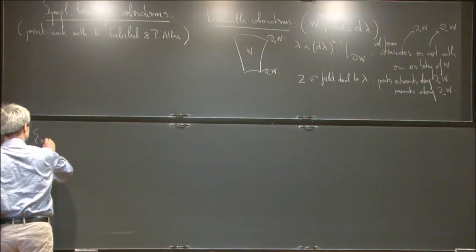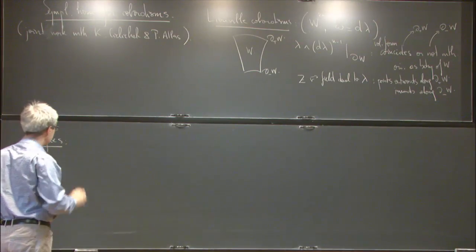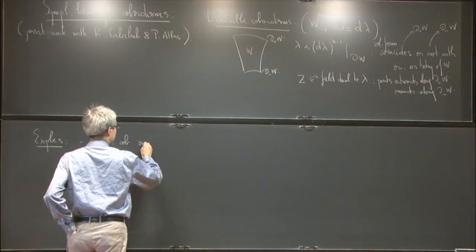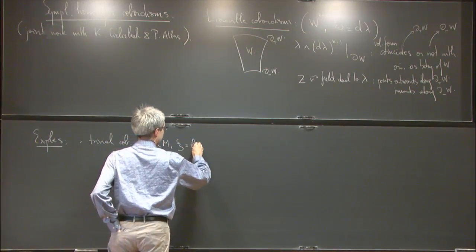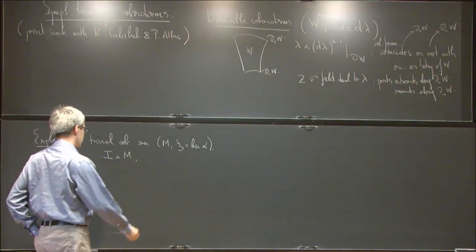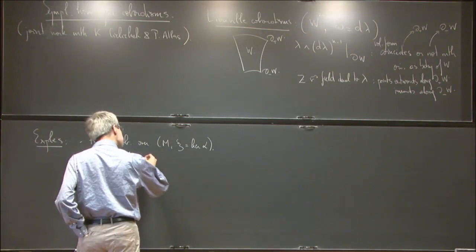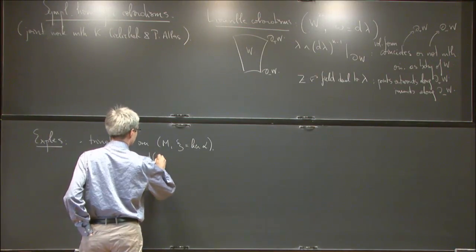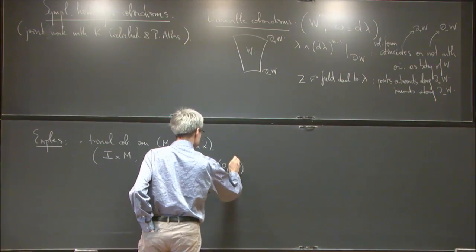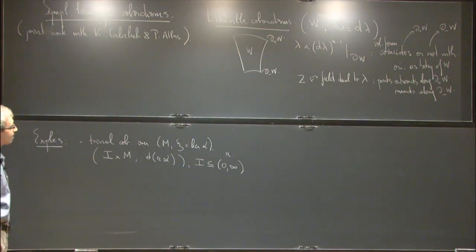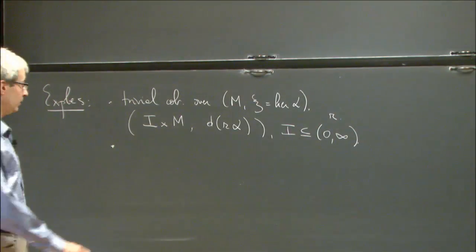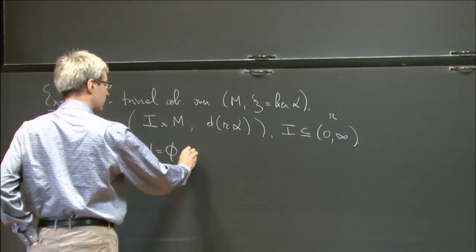As examples, of course there is an important example: the trivial cobordism over a contact manifold. You take an interval times M, put there a symplectic form d(r·alpha), where the interval is contained somewhere in (0, ∞). Then there are important cobordisms which are those that have no negative boundary — if the negative boundary is empty, we speak of Liouville domains.